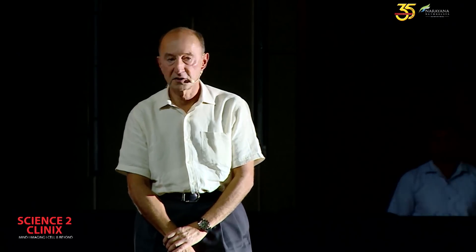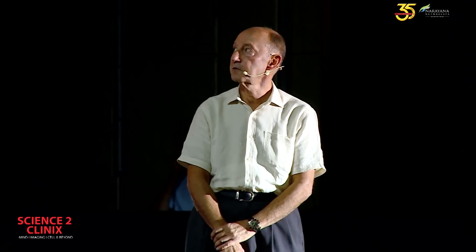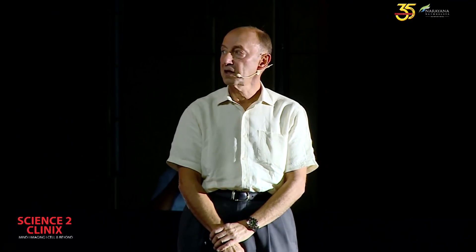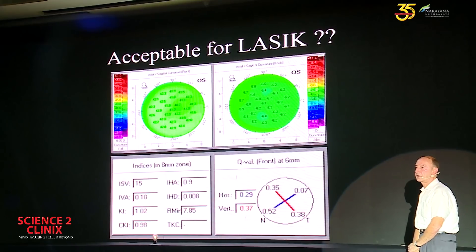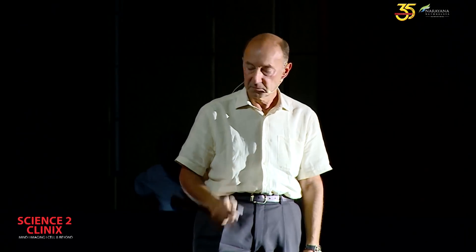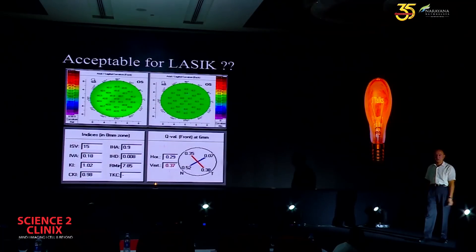How many of you would say this patient is acceptable for LASIK? It's a very normal anterior and posterior curvature map, and in the lower left are all the standard topography indices — available in other machines — and they're all very, very normal. We'll get back to this patient later.